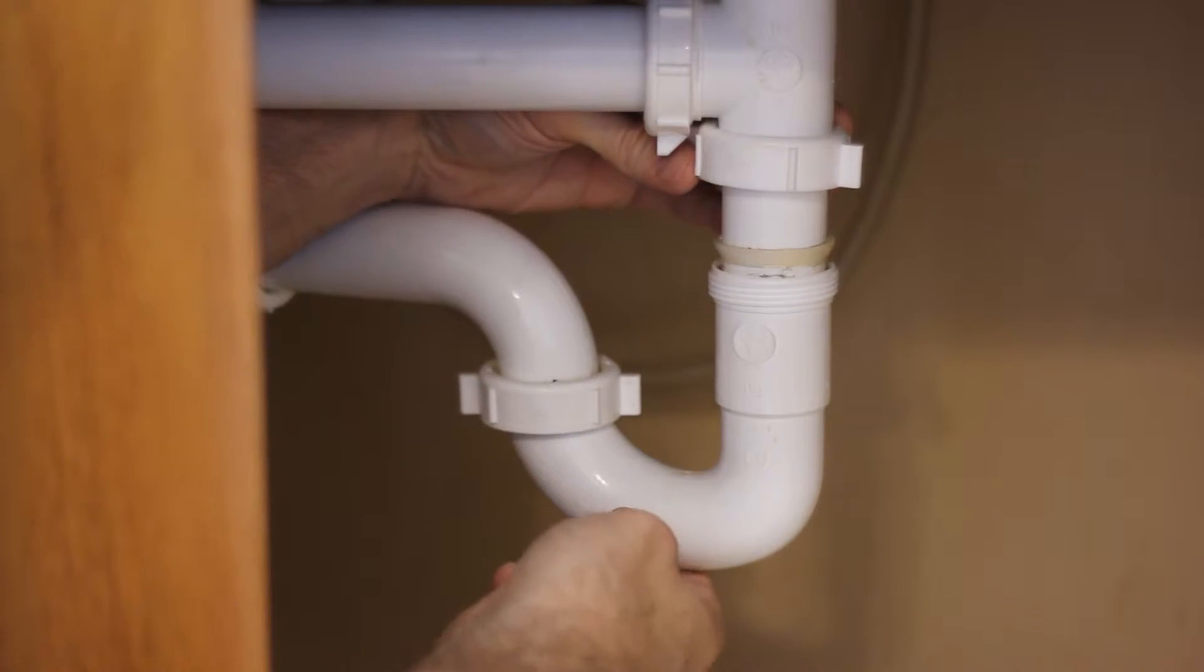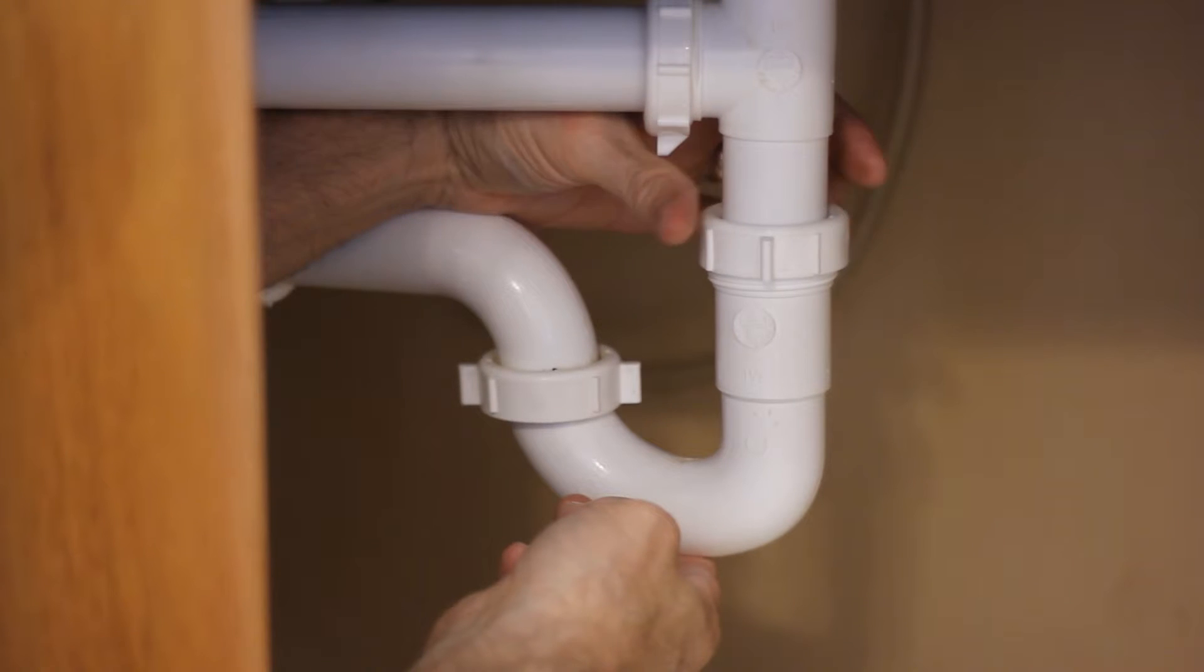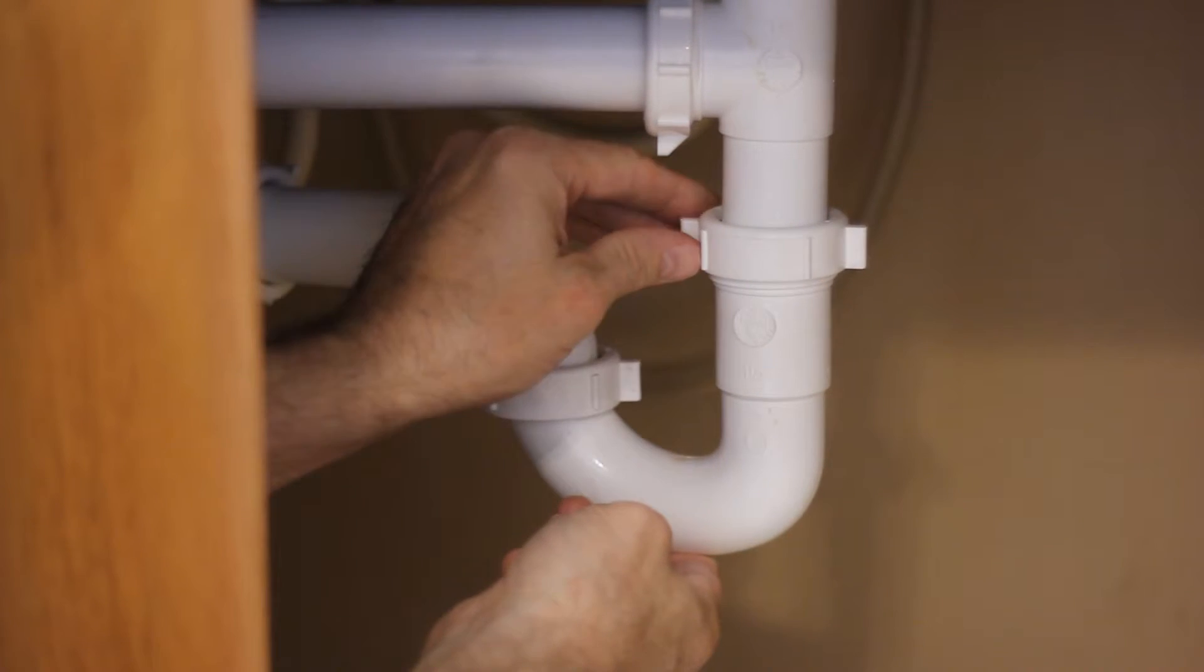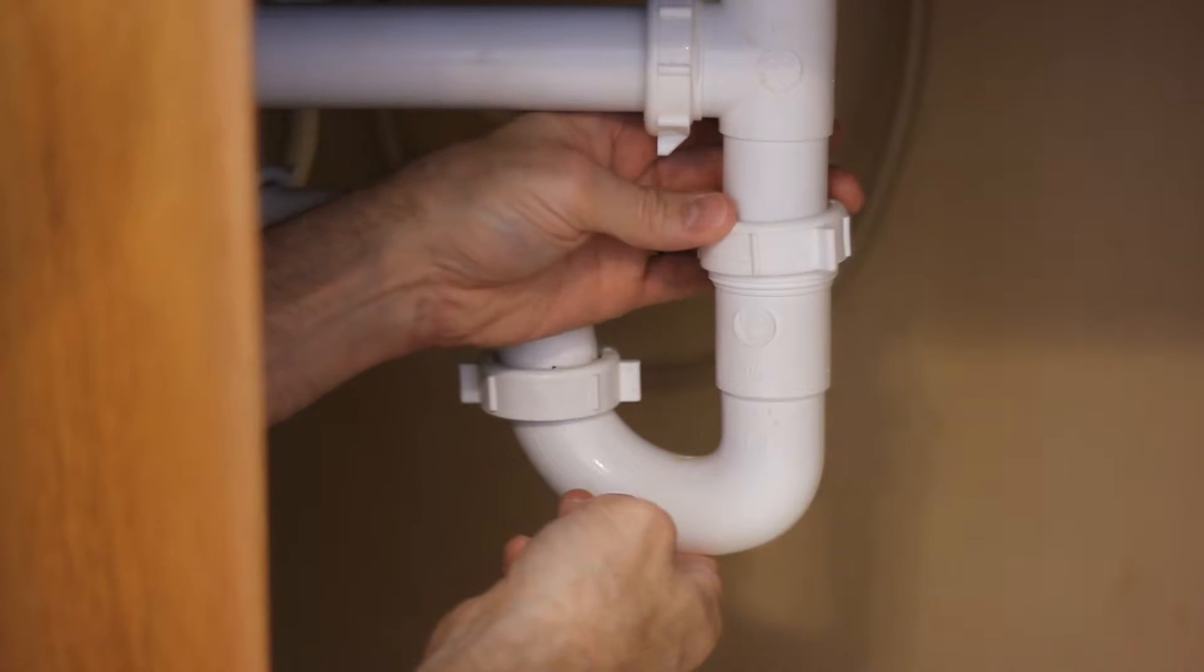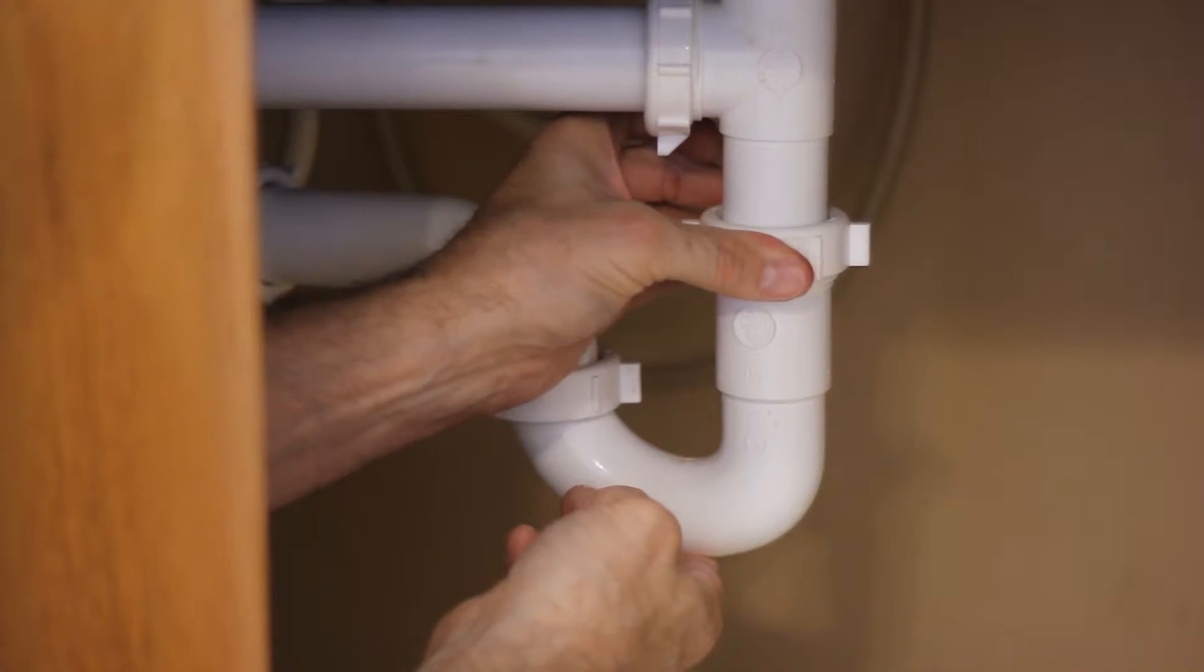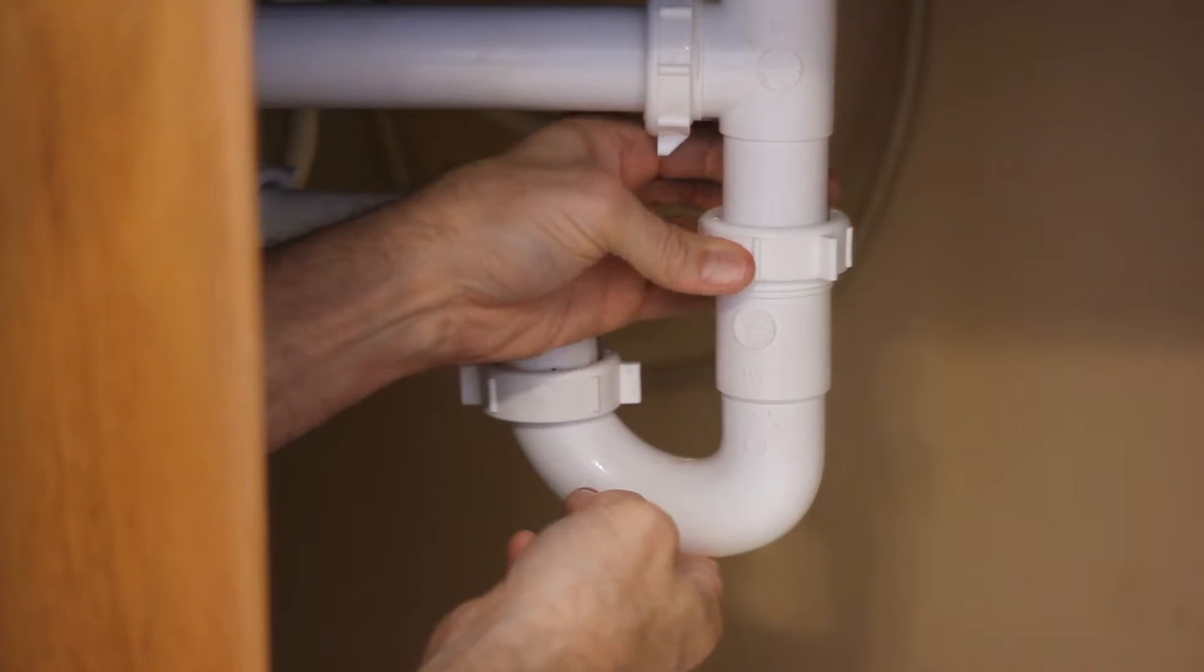The gasket would come in contact at the top of the threaded part. Just make sure you're getting the threads on there right and not cross-threading them. A lot of times you can do that by seating it on top and holding down firm and going backwards until you feel it snap and lock in, and then start turning it.